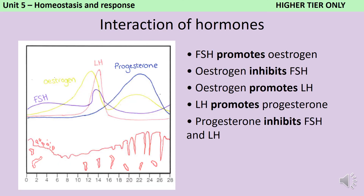If you're taking the higher tier, then in addition to stating the function of each of these hormones, you need to be able to describe how they interact with each other. At the start of the menstrual cycle, during menstruation, there's a small peak in follicle-stimulating hormone, and this small peak causes oestrogen to be produced — so we would say that FSH promotes the production of oestrogen. Oestrogen does two things: firstly, it stops any more FSH from being produced — we say that it inhibits FSH production, which is important because otherwise more than one egg would mature at once. The second thing that oestrogen does is it promotes the production of LH, so it makes more LH be produced, and this is important because otherwise ovulation wouldn't happen.